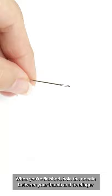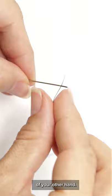When you're finished, pull the needle between your thumb and forefinger and hold the tip of the thread between the thumb and forefinger of your other hand. Push the tip of the thread through the eye of the needle and pull it through so that there's a generous tail.